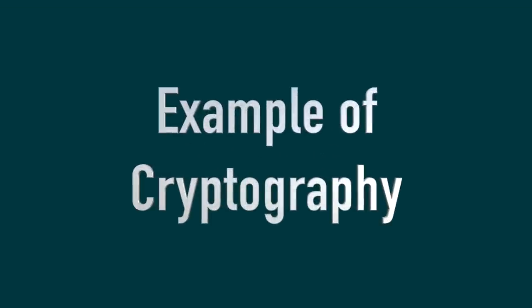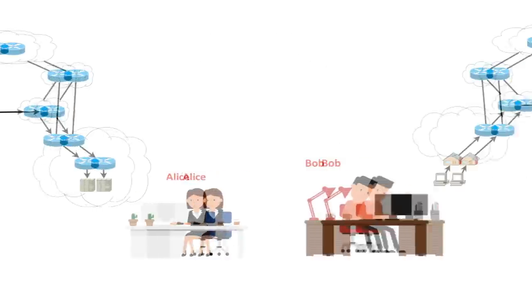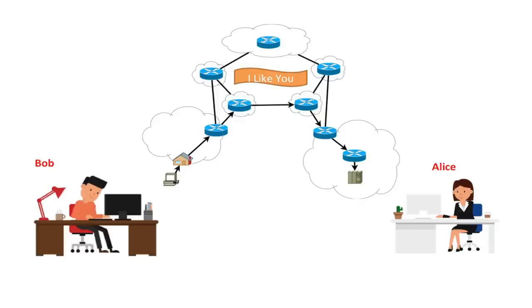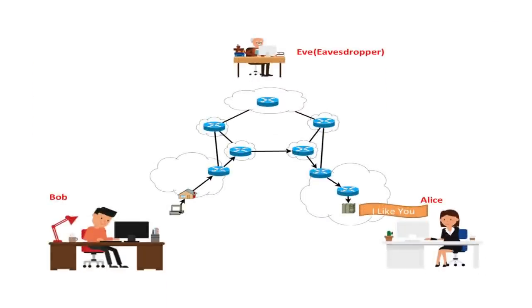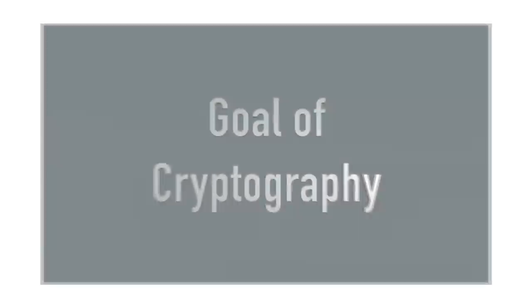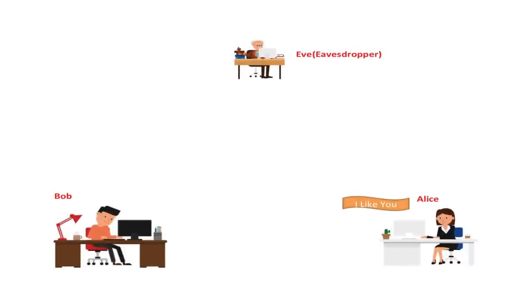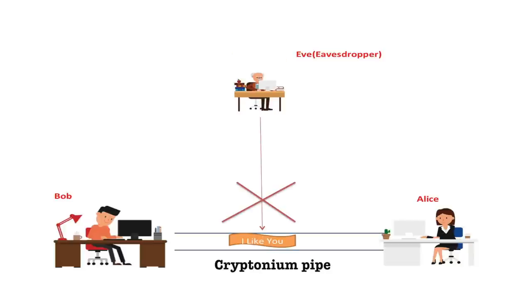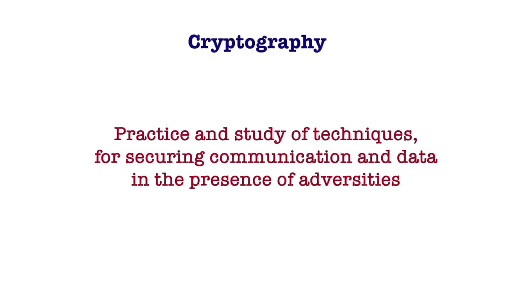Let us understand the concept with an example. Suppose there are two people, Alice and Bob, who want to pass notes back and forth privately using a public forum such as the Internet. Eve is interested in their private conversation and can do much more than eavesdropping — for example, Eve could change the content of the message, which could be catastrophic. The goal of cryptography is to protect this communication and make it secure using the notion of a cryptographic pipe, where Alice sends messages through a secure medium and Eve cannot read, tamper or access these messages during transit. We define cryptography as the practice and study of techniques for securing communication and data in the presence of adversaries.